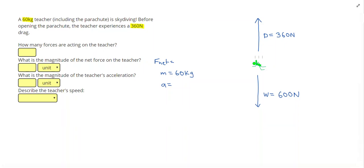Next, I can find the net force. So I know I have weight acting downwards, drag acting upwards. Those are in opposite directions. So I'm going to subtract those, since they're fighting against each other. And that gives me a net force of 240 N.